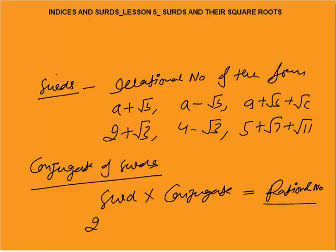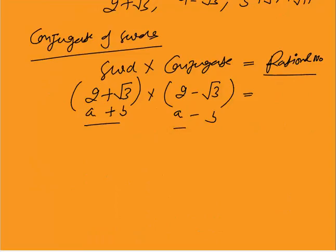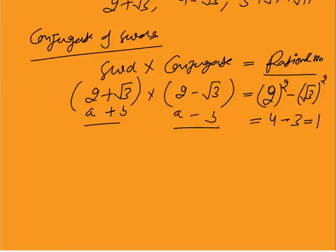For example, a surd like 2 plus root 3 — now what should we use as the conjugate so that the product becomes a rational number? This is 2 plus root 3, in the form of a plus b. If we multiply this by a minus b, that is 2 minus root 3, we get a plus b into a minus b, which is a squared minus b squared. That is 2 squared minus root 3 squared, which gives 4 minus 3, that is 1. So the product is a rational number.